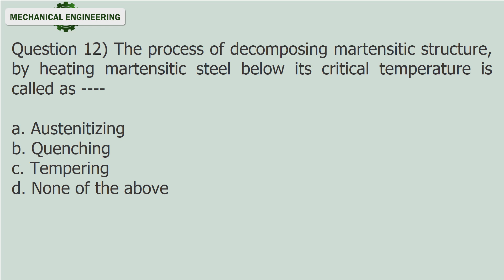Question 12: The process of decomposing martensitic structure by heating martensitic steel below its critical temperature is called as — (fill in the blank). A. Austenitizing. B. Quenching. C. Tempering. D. None of the above. Answer: Tempering.